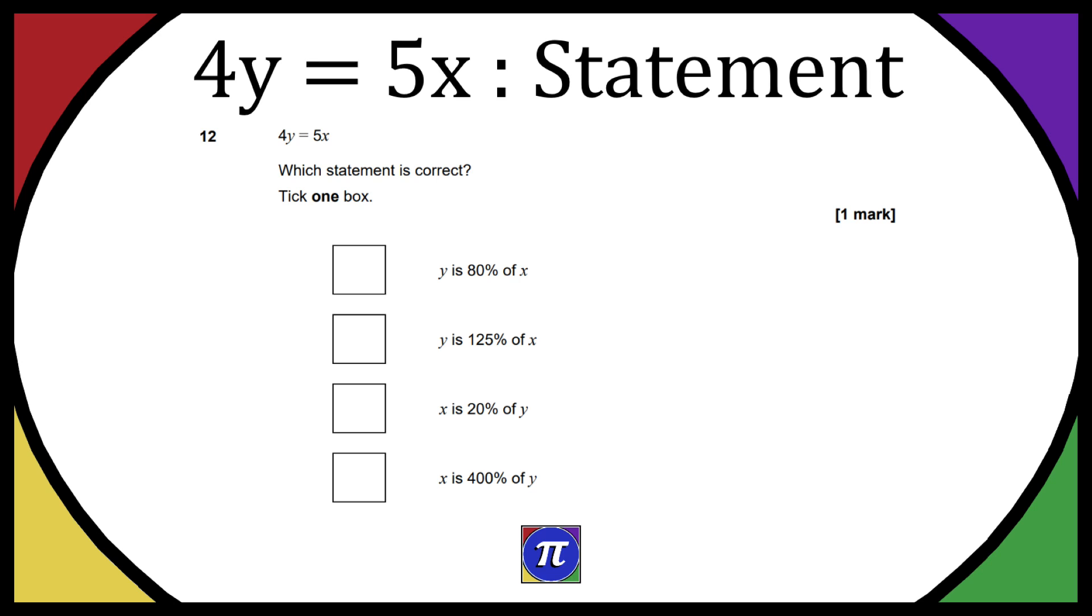So we have y is equal to 80% of x, y is 125% of x, x is 20% of y, or x is 400% of y.